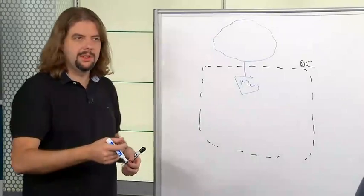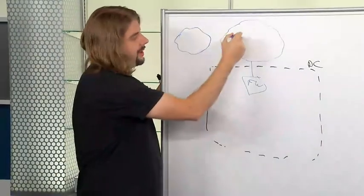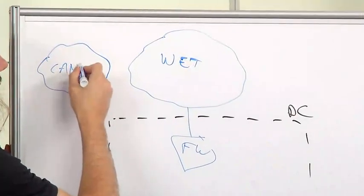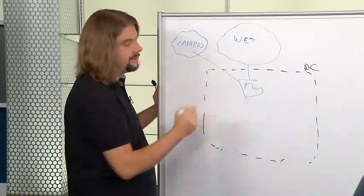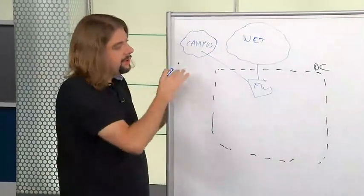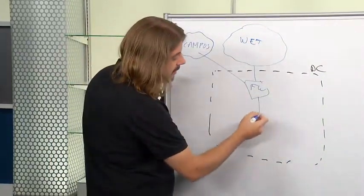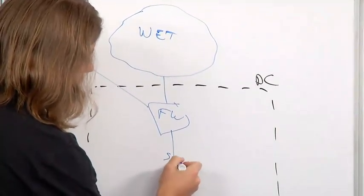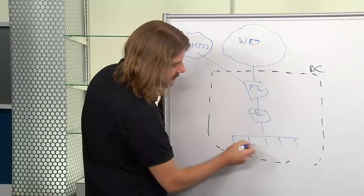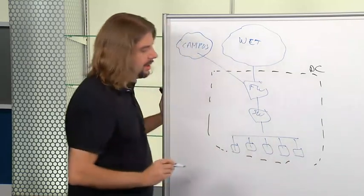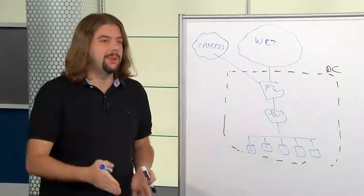Inside the data center we have a firewall at the edge, a switch, and a number of workloads. The campus and internet connect through the firewall at the DC perimeter. Titration is primarily a DC product that also has visibility into the campus and provides identity from it. We'll simplify by using one firewall for both campus and internet traffic for the sake of this discussion.